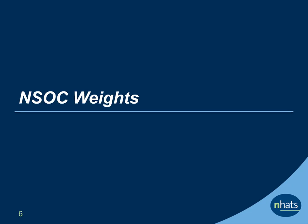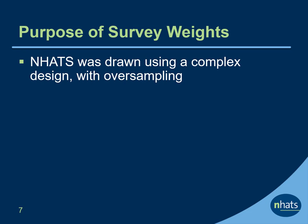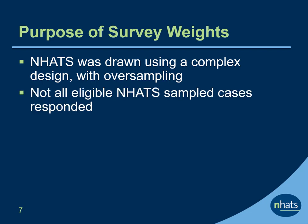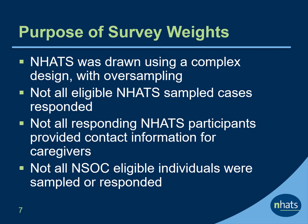Next, let's review NSOC weights. Survey weights are recommended when using NSOC because individuals have different probabilities of participating. For instance, the NHATS sample was drawn using a complex design with oversampling of individuals at older ages and by race. In addition, not all individuals eligible for the study responded, and some groups are more likely to respond than others. Not all responding NHATS participants provided contact information for caregivers, and not all NSOC-eligible individuals were sampled or responded. So to take into account different probabilities of selection into and responding to NSOC, each NSOC participant has been assigned a weight for each round. To make unbiased inferences about older Medicare beneficiaries and not just the sample responding to NHATS, survey weights are needed.